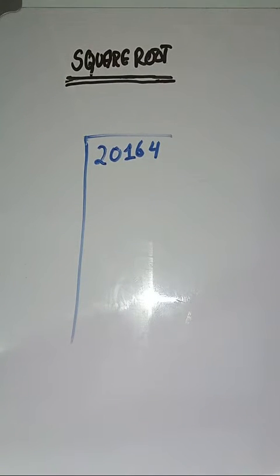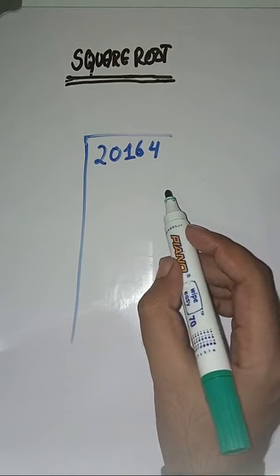Hello everyone, hope you are fine. Welcome to my channel MathX World students. Today we will learn how to find the square root. We have to find the square root of 20164. So first step is we have to make pairs from right to left like this: 64, 01, and 2.